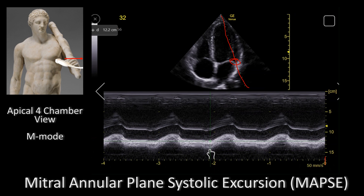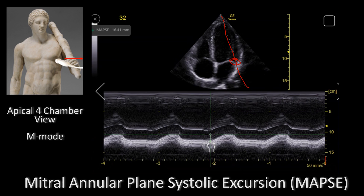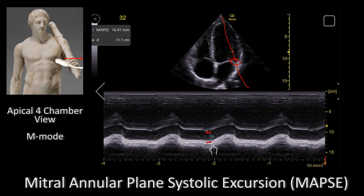When you're measuring MAPSE you want to measure it from the end of diastole to the end of systole. So what you're focusing on is this distance.